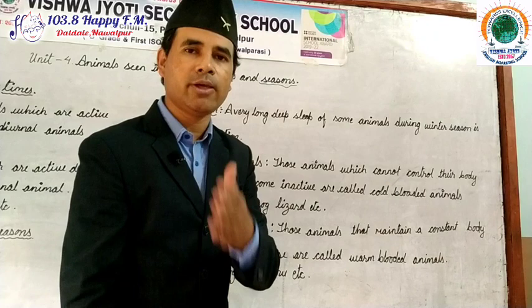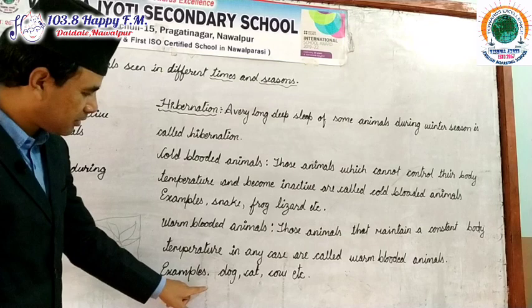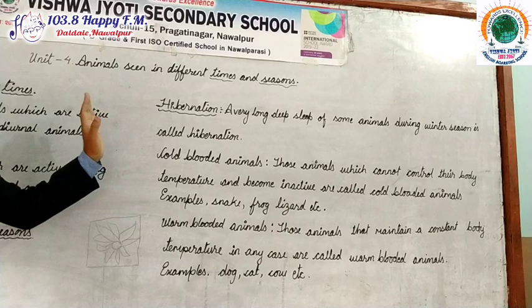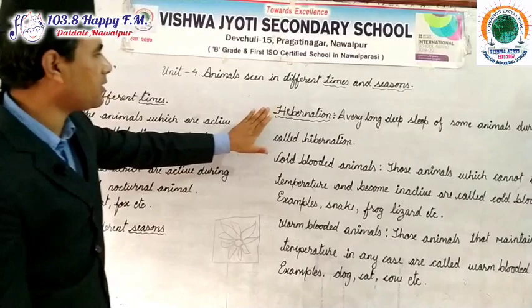Warm-blooded animals maintain a constant body temperature in any condition. Examples: dog, cat, cow, you and me. These are the basic and important things regarding animals seen in different times and seasons.